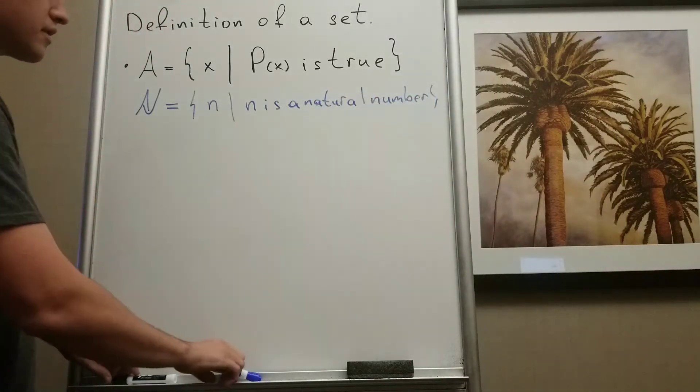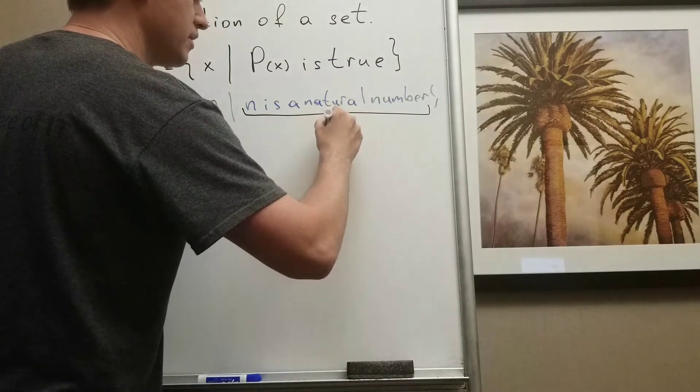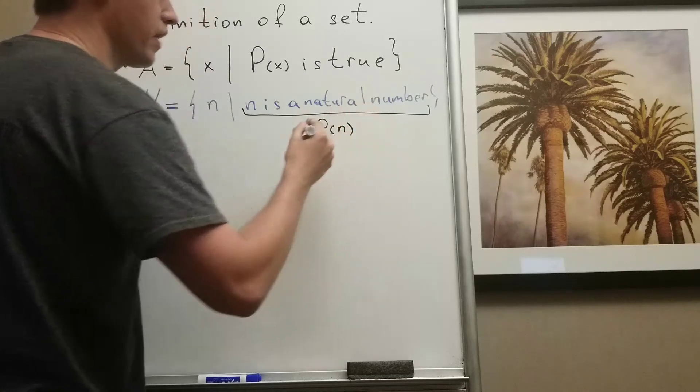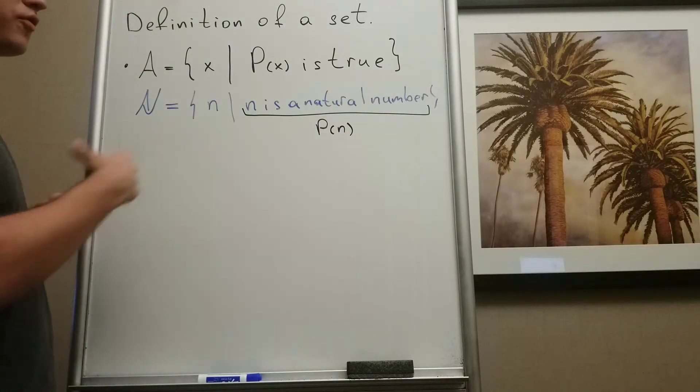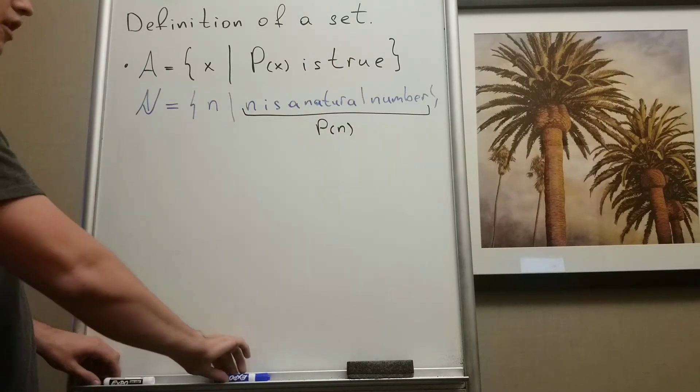And in this case, our P of X is a statement. Our statement - it's not P of X, in this case it's P of N. So our statement P of N is that N is a natural number. So for example, let's check if...